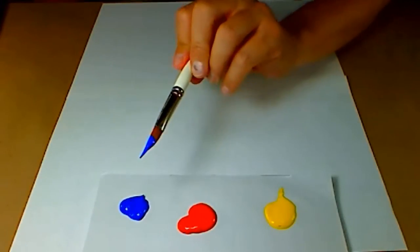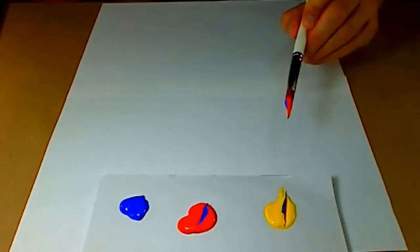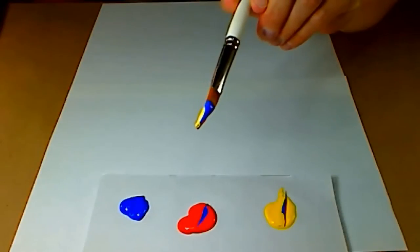Lay one side in the first color, turn it, pick up the second color, turn it to the other side and pick up that third color. So we've got three different colors on this brush.